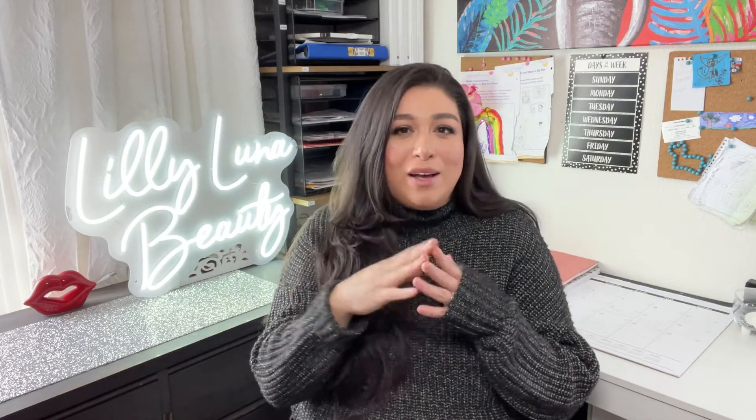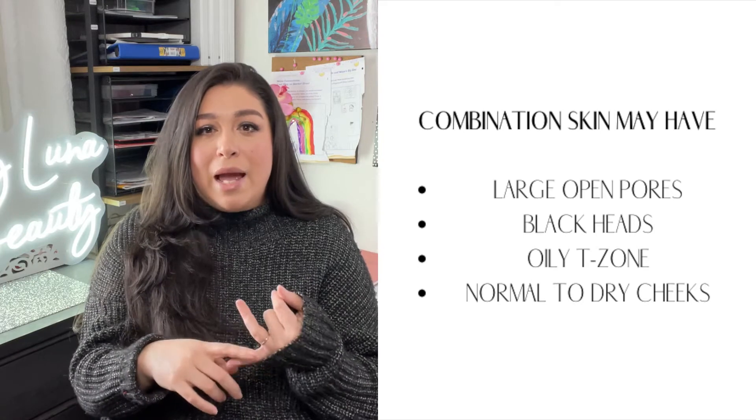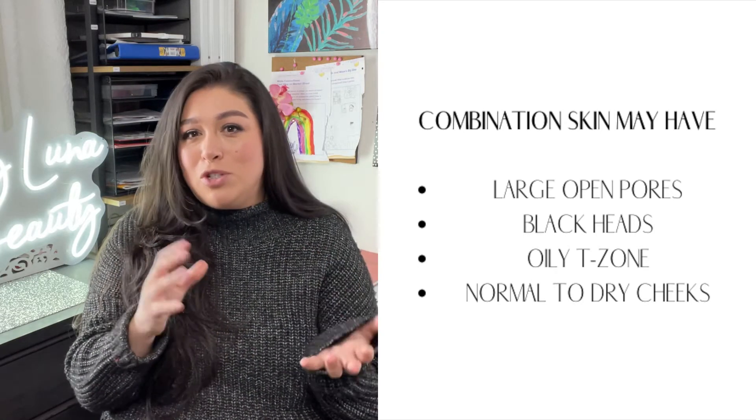Number three is the combination skin type. Combination skin has a mix of two different skin types. It can be more dry or normal, usually around the cheeks, and oily in the T-zone — that is the forehead, chin, and nose. Combination skin may have large open pores, blackheads, an oily T-zone, and normal to dry cheeks.